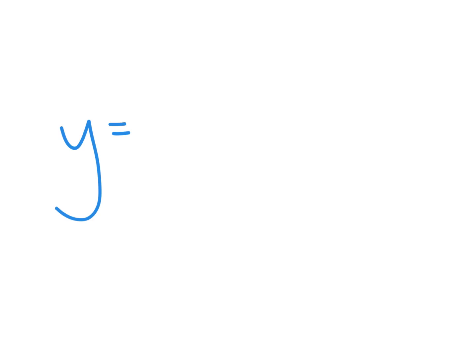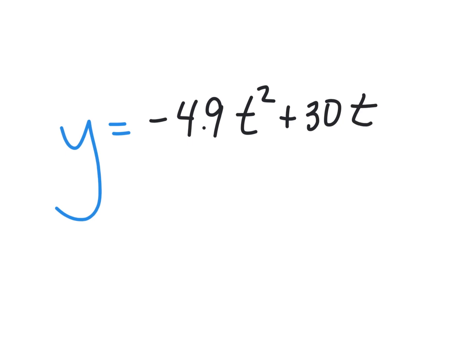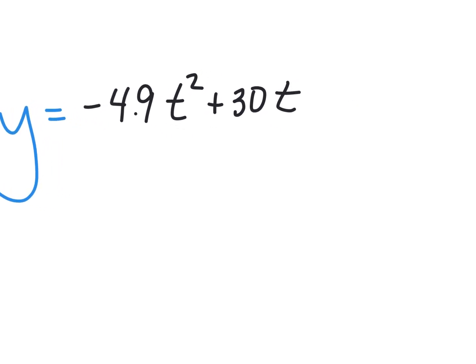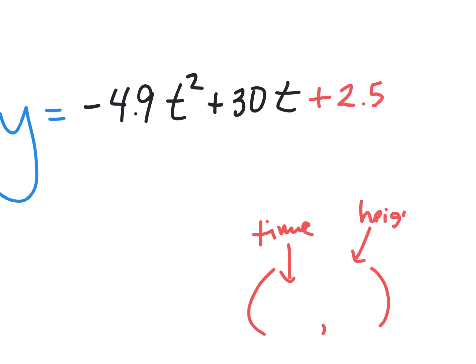Let me give you a new one. It always starts with -4.9t². Let's say Jimmy has the strongest arm in the class and can throw at 30 meters per second — that's the velocity — and he's pretty tall, releasing the ball from two and a half meters up. Please find the vertex: when does the ball hit its highest point, and how high is that?